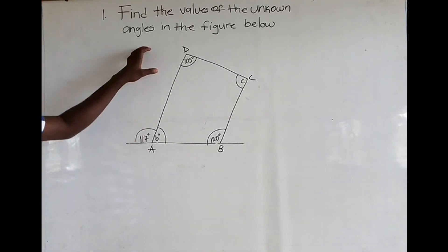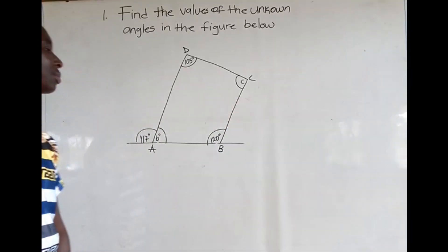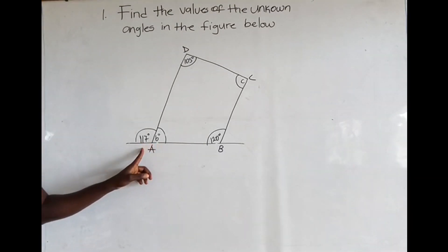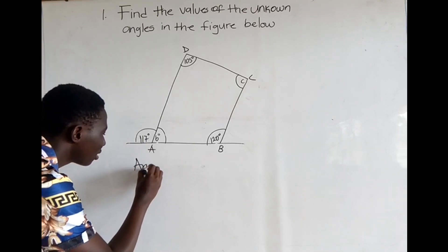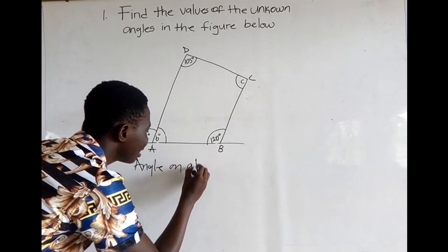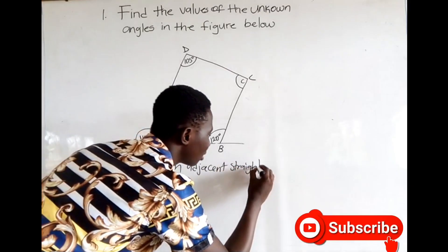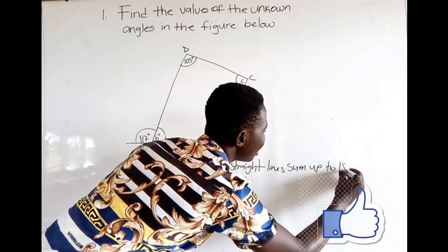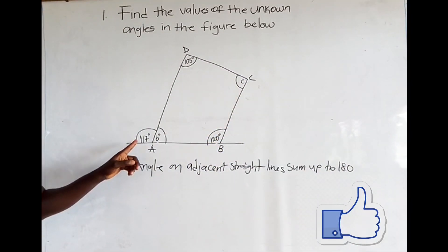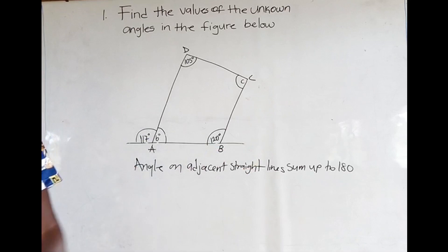Find the values of the unknown angles in the figure below. We need to find angles b and c. Looking at these two angles, they are on a straight line and adjacent to each other. One property of a straight line is that angles on an adjacent straight line sum up to 180. So we are going to add 117 and b and set it equal to 180.